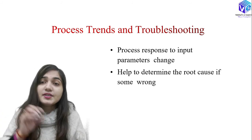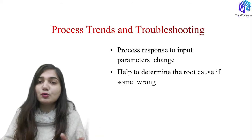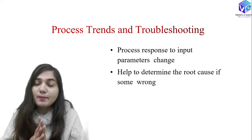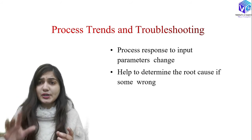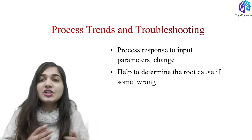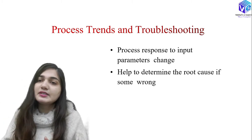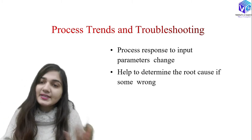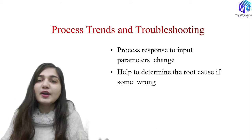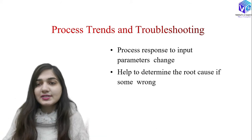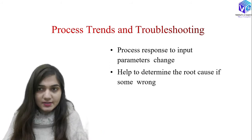If we find out there is some problem with the process, we need to troubleshoot — we need to find out the root cause of this problem. This is called troubleshooting. If I get to know what is the root cause, I can change and eliminate it, and this is how I can get the best outcome for a particular input parameter. Process trend means for a particular input, I am getting a particular process response.